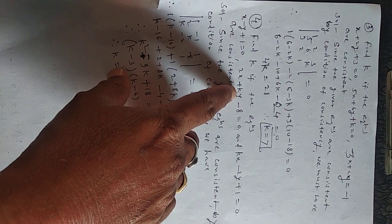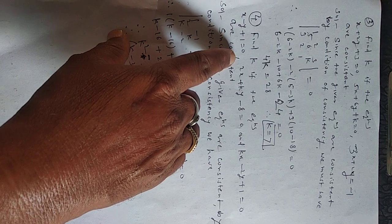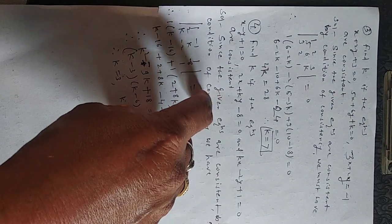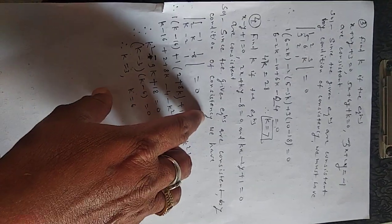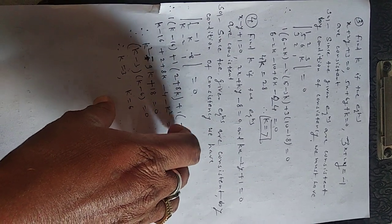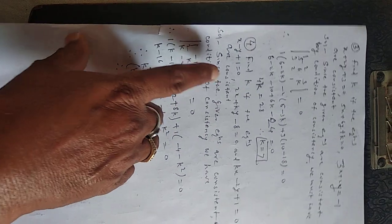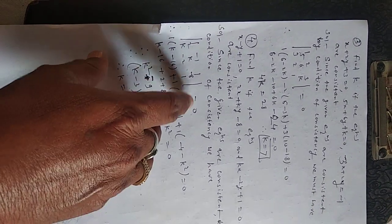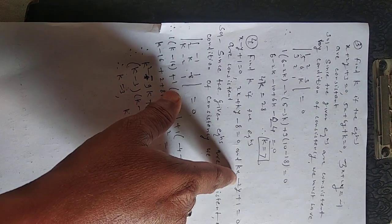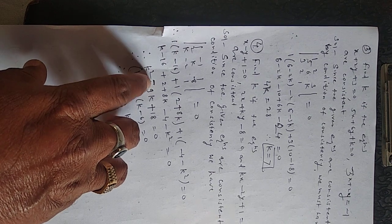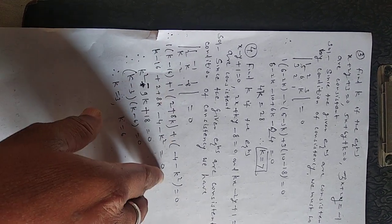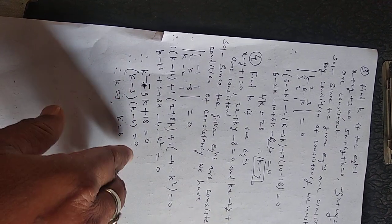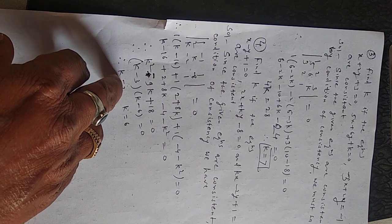Second example of this category: find k if x - y + 1 = 0, 2x + ky - 8 = 0, and kx - 2y + 1 = 0 are consistent. Since k appears in both the second and third equations, we set the determinant with rows (1, -1, 1), (2, k, -8), (k, -2, 1) equal to 0. Expanding gives k² - 9k + 18 = 0, that is (k - 3)(k - 6) = 0, so the values of k are 3 and 6.